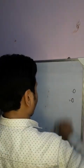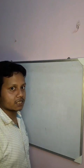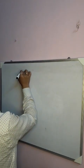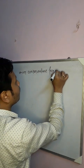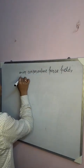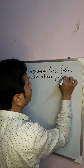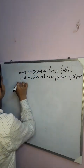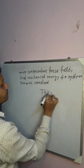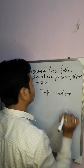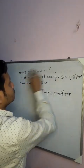Now let us move to another theorem — the energy conservation theorem. Under a conservative force field, the total mechanical energy of a system remains constant. That is, kinetic energy plus potential energy equals constant. This is the energy conservation theorem.